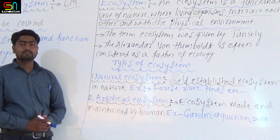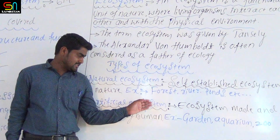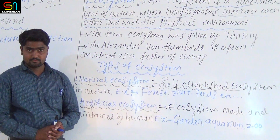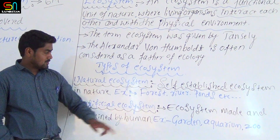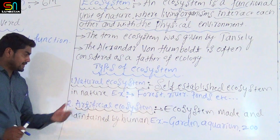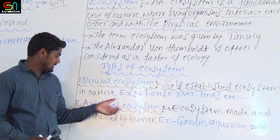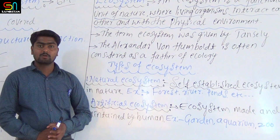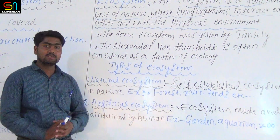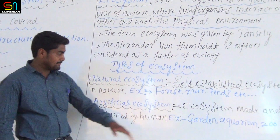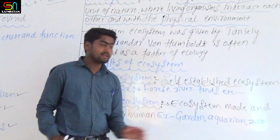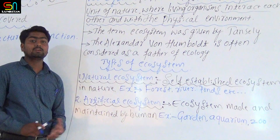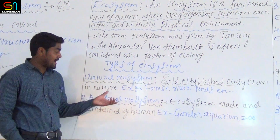Second type: artificial ecosystem. An artificial ecosystem is a man-made ecosystem — made and maintained by humans. Examples include aquarium and other man-made environments.